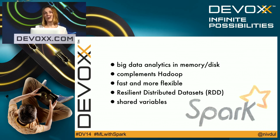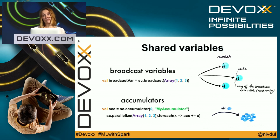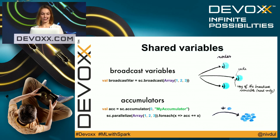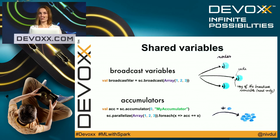Spark has two main abstractions: RDD — resilient distributed datasets — and shared variables. There are two types of shared variables: broadcast variables, used when you have a large dataset that needs to be sent across all nodes of your cluster in memory; and accumulators, used to accumulate values, for example as a counter for errors.